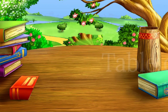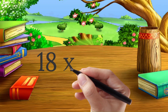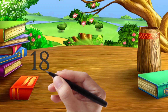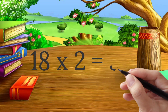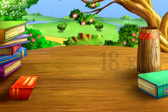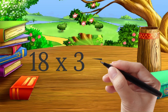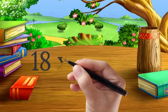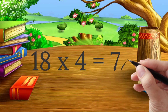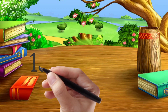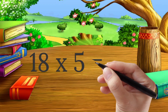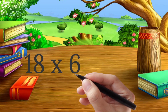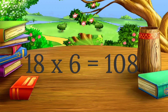Table of 18. 18 one's are 18. 18 two's are 36. 18 three's are 54. 18 four's are 72. 18 five's are 90. 18 six's are 108.